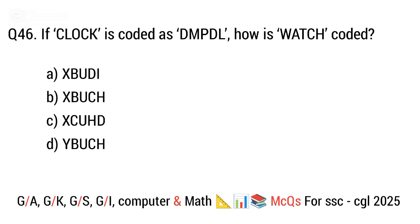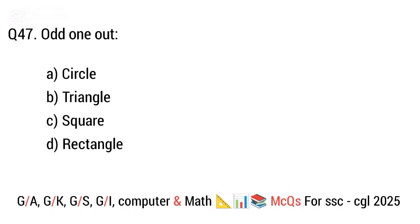Question 46. If 'clock' is coded as D-M-P-D-L, how is 'watch' coded? The right answer is option A. X-B-U-D-I.